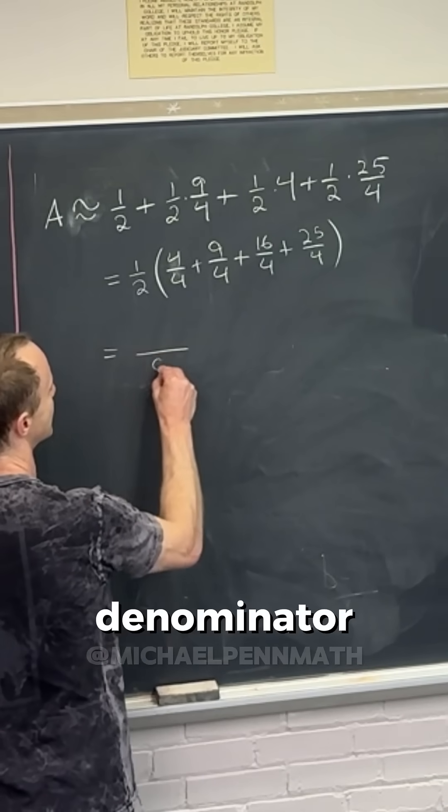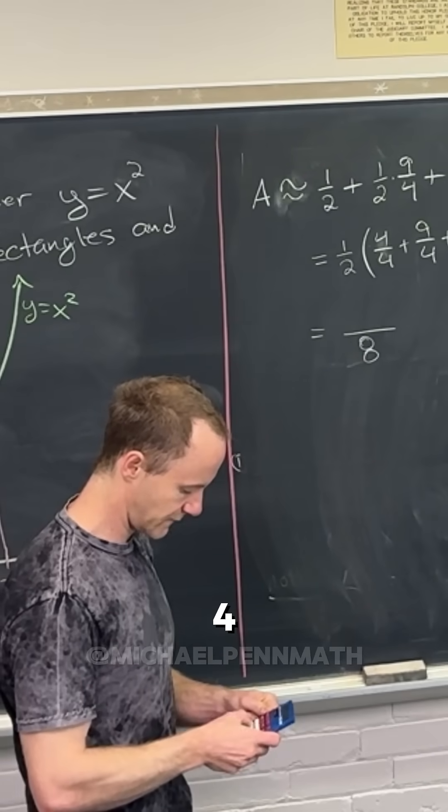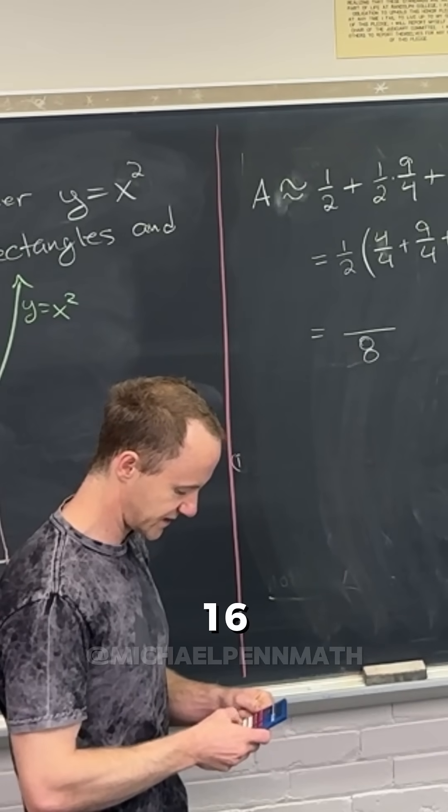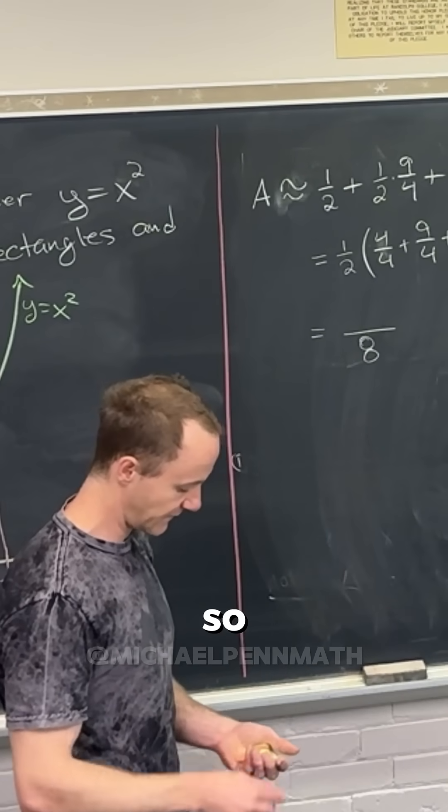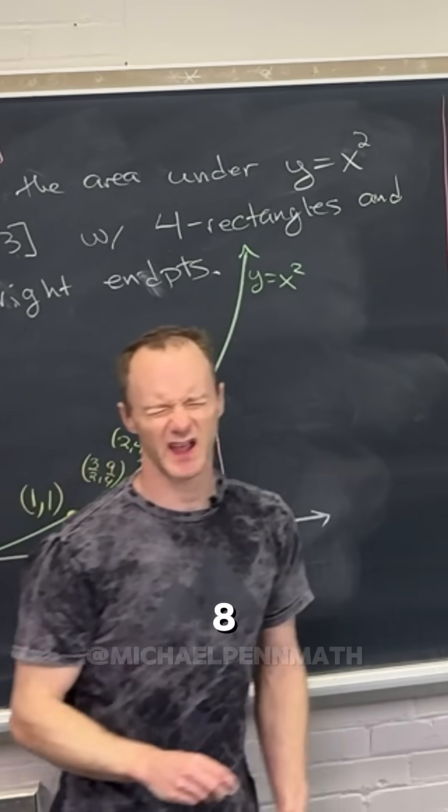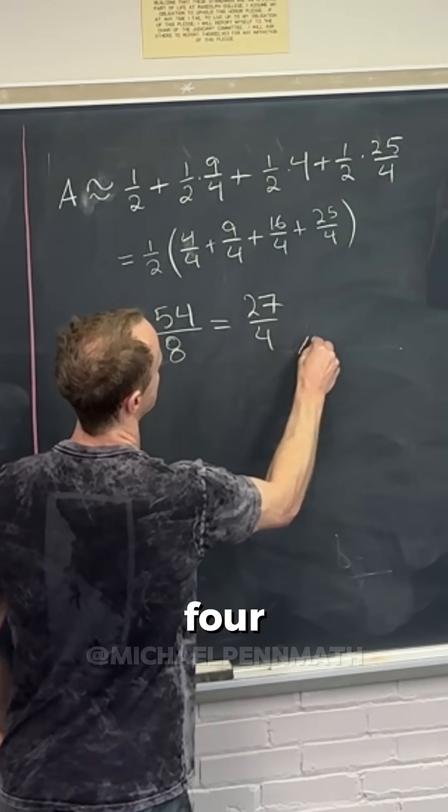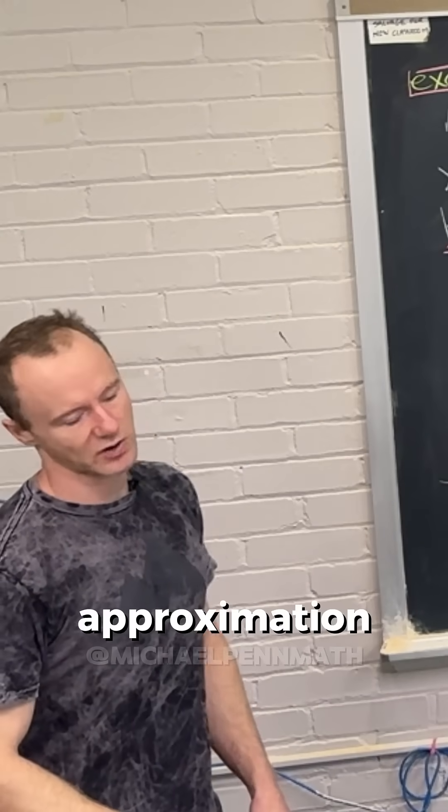Anyway, so let's see, that's going to be we've got a denominator of eight and then a numerator of, well, let's see, four plus nine plus 16 plus 25, so 54. So that turns into 54 over 8. 54 over 8 is 27 over 4, is that right? 27 over 4. So there's our left hand approximation.